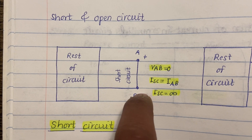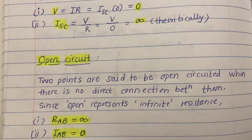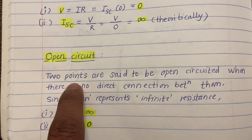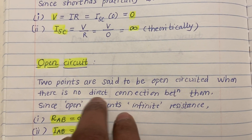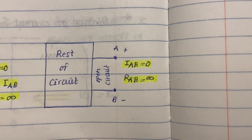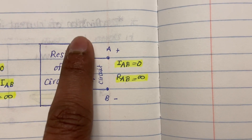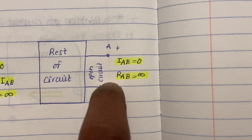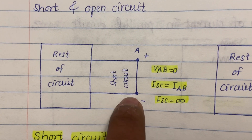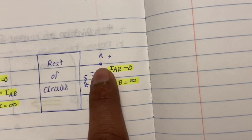Now let's understand what is open circuit. Two points are said to be open circuited when there is no direct connection between them. Whatever may be the circuit, I'm showing it as a block — it doesn't matter. What matters is these two terminals. Here there is no physical connection between A and B, whereas for the short circuit we had a physical connection with a thick metallic wire.